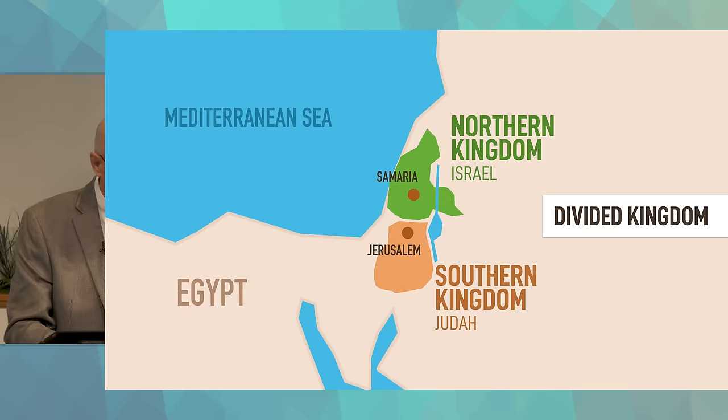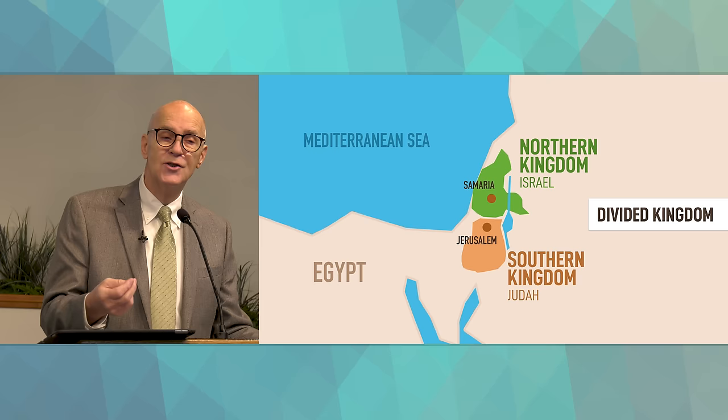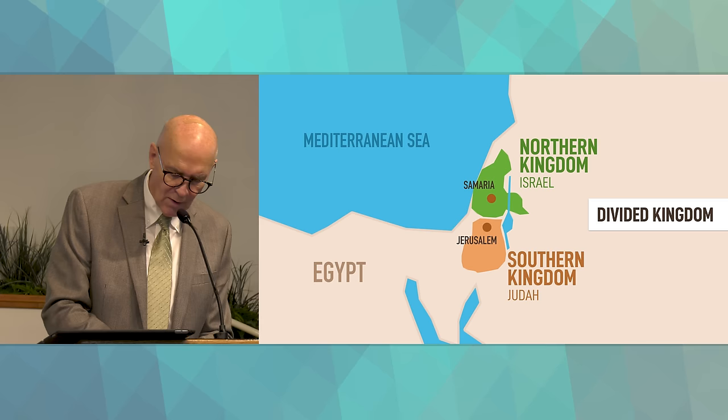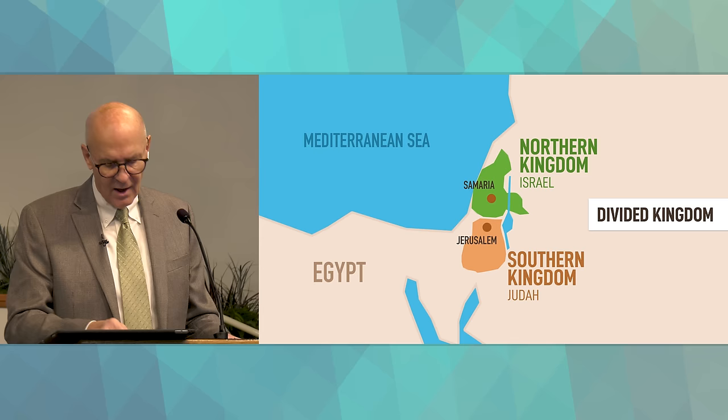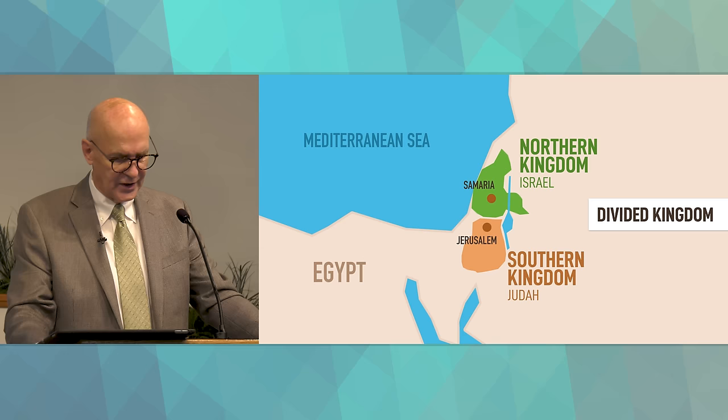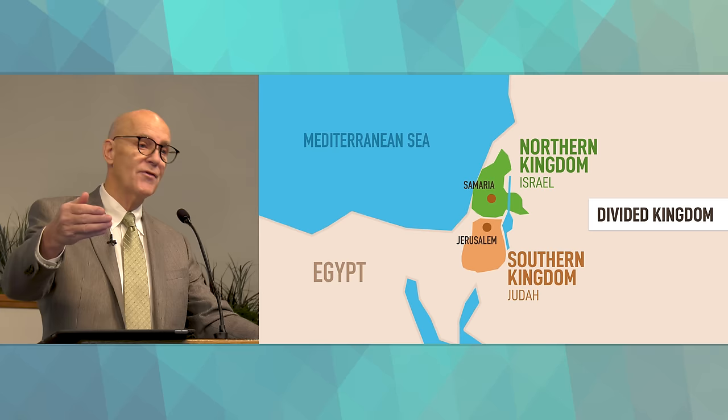Two tribes, Judah and Benjamin, formed the southern kingdom. They remained loyal to Solomon's son Rehoboam, who ruled what was called the southern kingdom of Judah, with its capital the city of Jerusalem. The other 10 tribes in the north formed the northern kingdom of Israel.